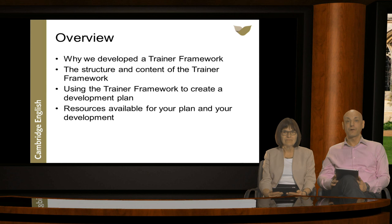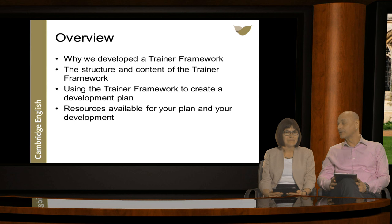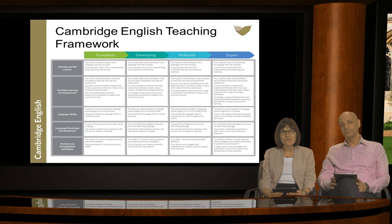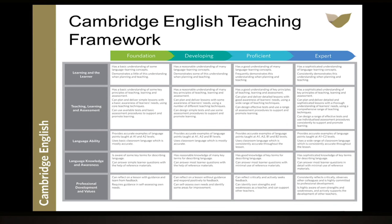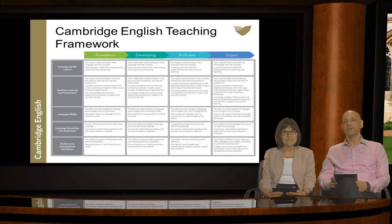So Monica, why did Cambridge English Language Assessment think it was important to develop a framework for trainers? Well, many of you will know we've already developed the Cambridge English Teaching Framework — a grid describing the skills teachers need across five categories at four different stages: Foundation, Developing, Proficient, and Expert. Teachers use it to see where they are now in their development and where they can go next. Let's see how many of you are familiar with it — please use your poll button to say yes or no.